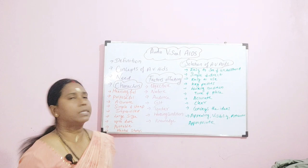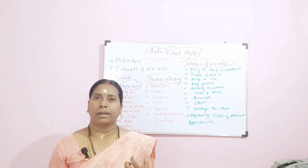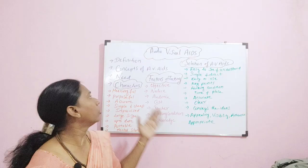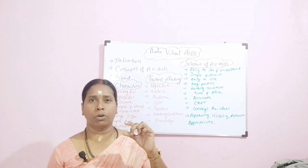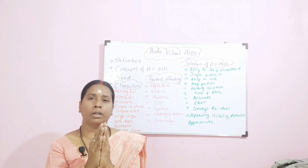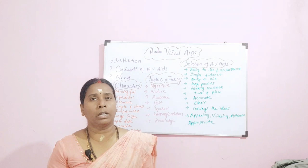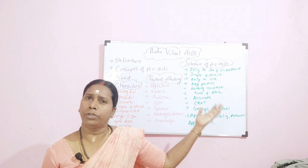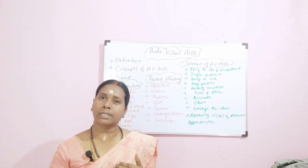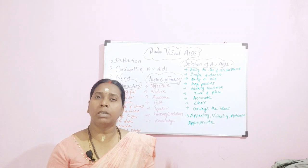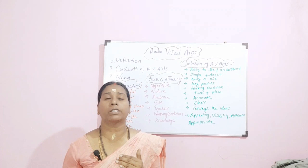Then comes the factors affecting AV-AIDS. Sometimes AV-AIDS is not effective — why does this happen? First is the objective. You must always remember the objective of the teaching process — sometimes it is only knowledge, sometimes it is a skill. You must understand what type of AV-AIDS to use. For knowledge, a blackboard, pen drive, or OHP will be enough. If your objective is skill-based, you must have a simulator, a dummy, and a skeleton.